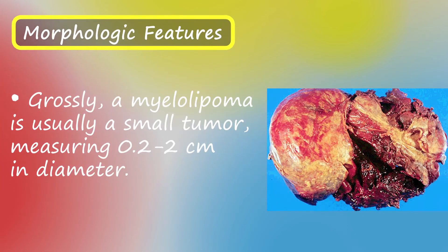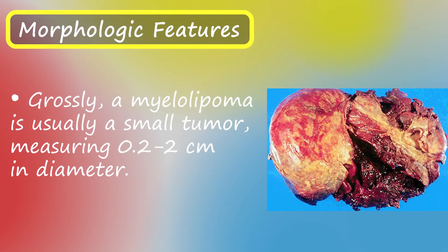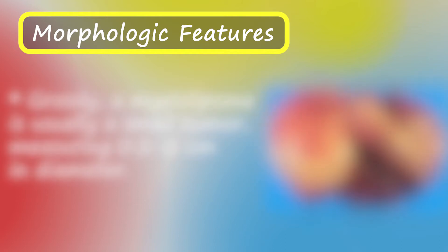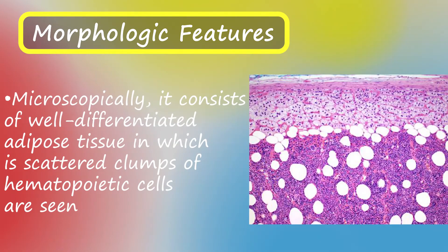Morphologic features. Grossly, a myelolipoma is usually a small tumor, measuring 0.2 to 2 cm in diameter. Microscopically, it consists of well-differentiated adipose tissue in which scattered clumps of hematopoietic cells are seen.